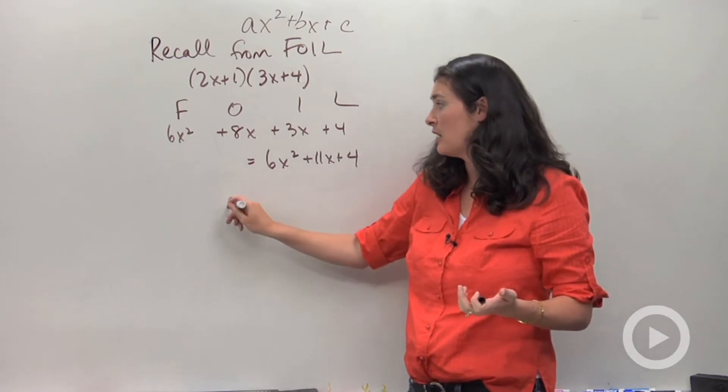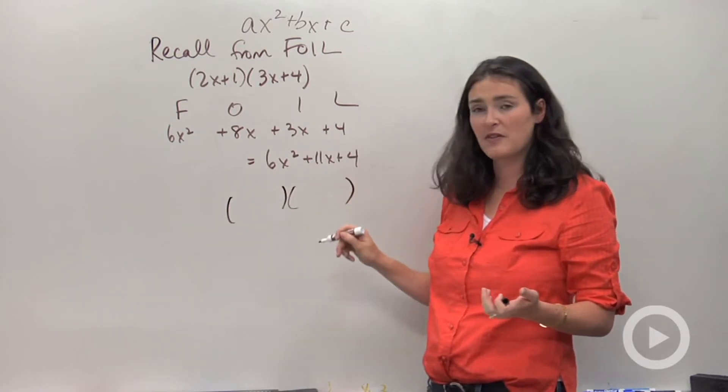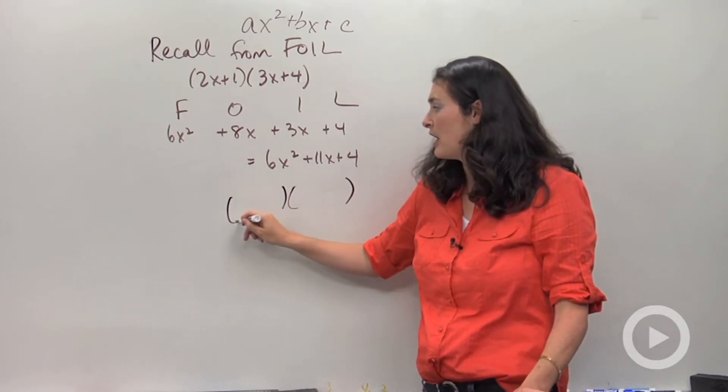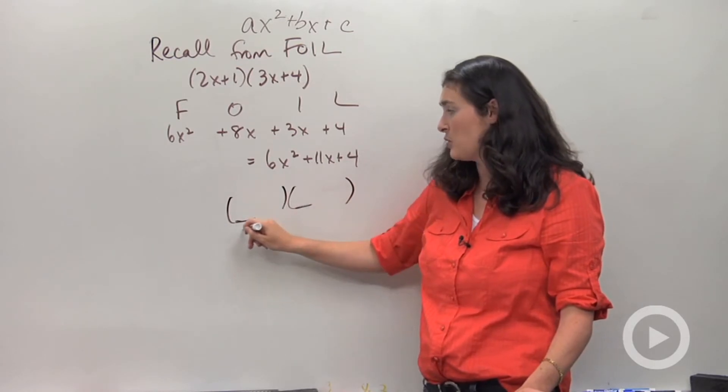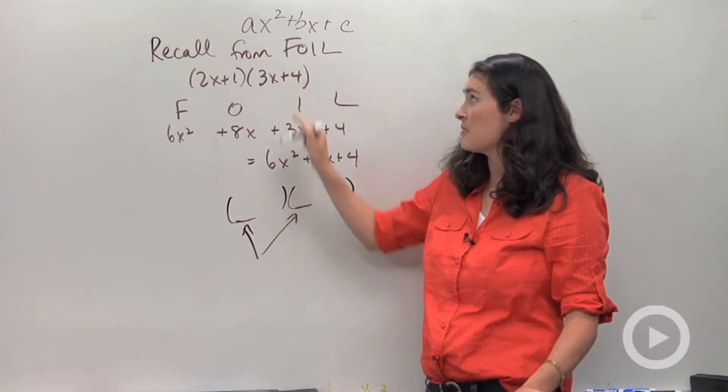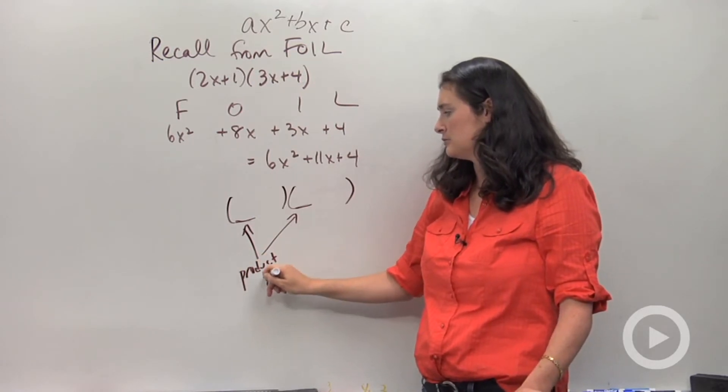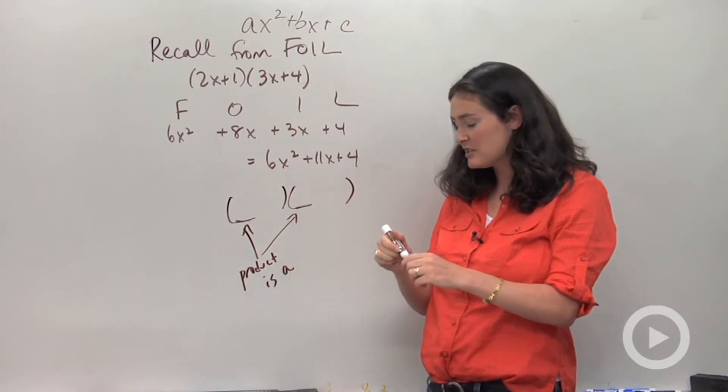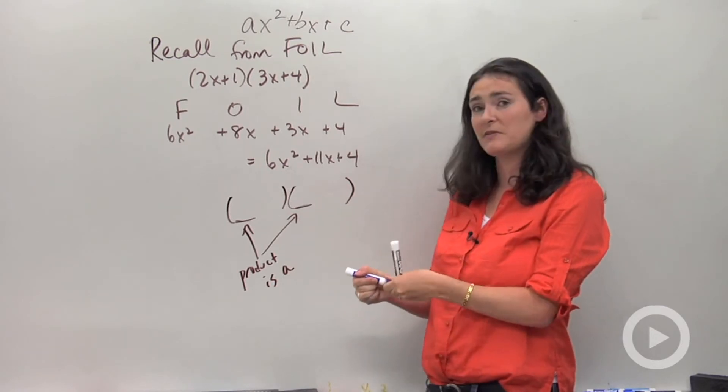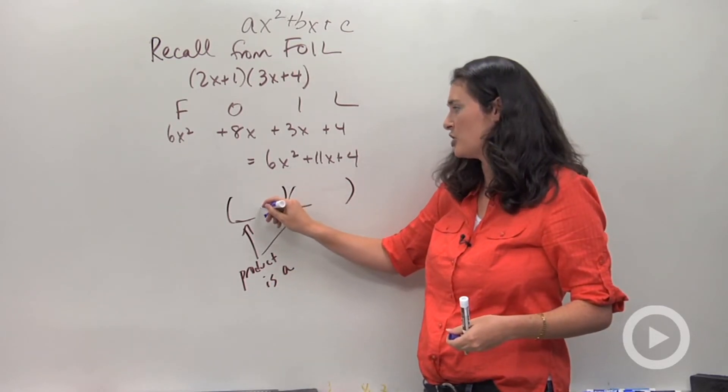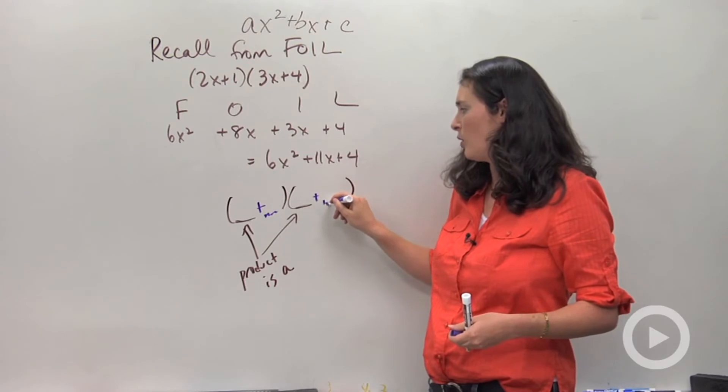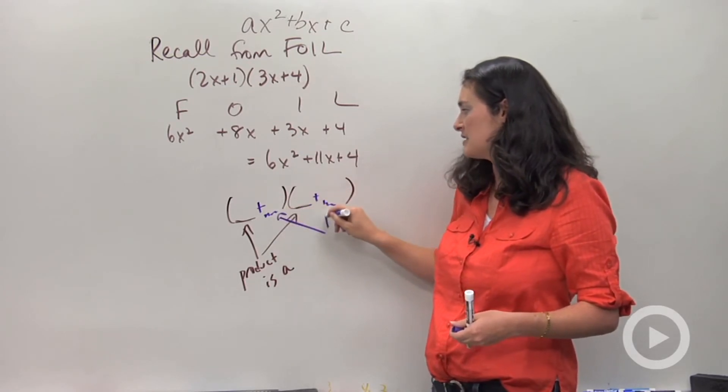Here's what you're looking for. You're going to have two sets of parentheses like this where the product of these guys is equal to your a term, meaning your first coefficient. And then your second terms, I'm going to use different colors to show you what I mean. You're going to be adding something where the product of these guys is c.